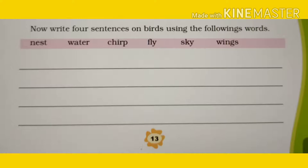The answer of this question is four sentences using these words. The birds fly high in the sky. The birds chirp when they fly. The birds came back to their nest after drinking water. The birds have wings to fly.